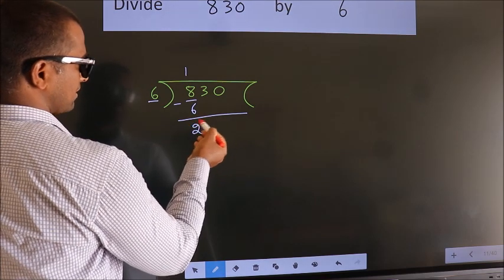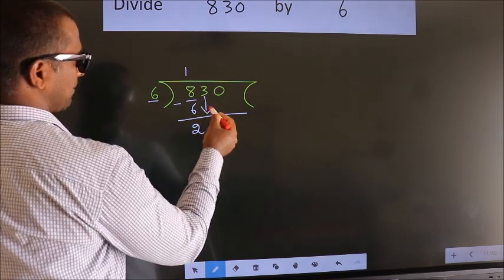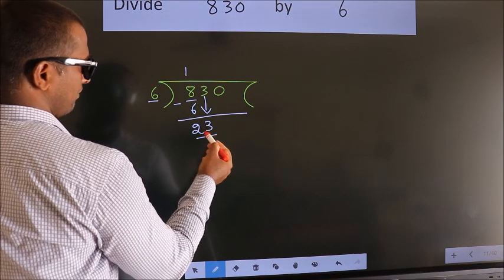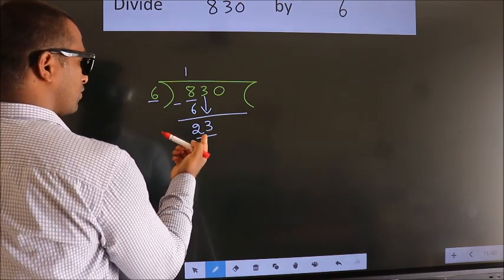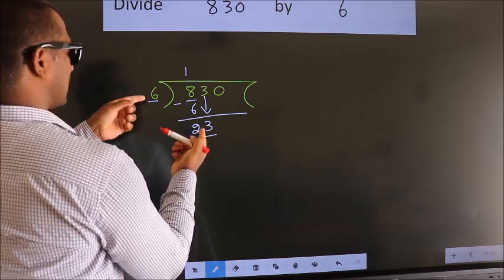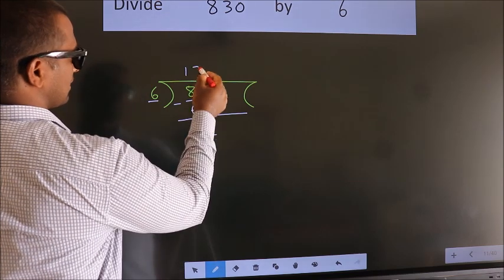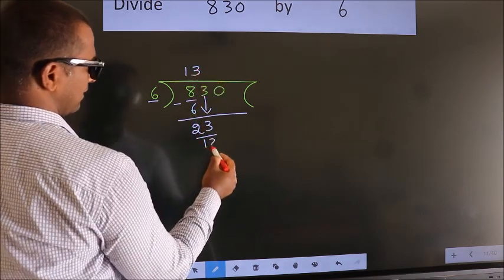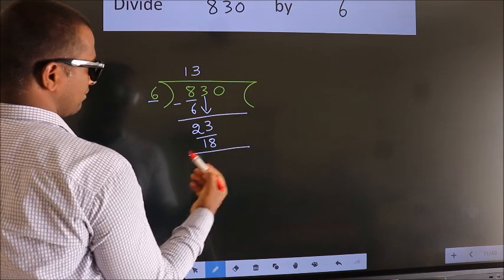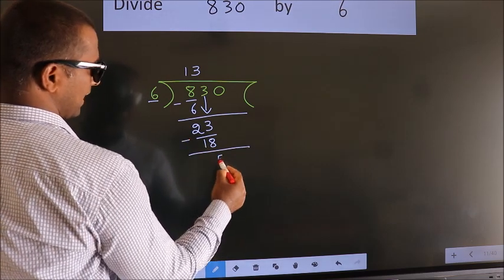After this, bring down the beside number. So 3 down. So 23. A number close to 23 in the 6 table is 6 times 3 equals 18. Now we subtract. We get 5.